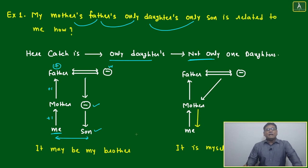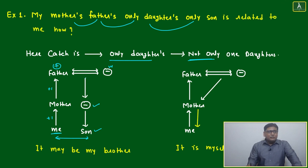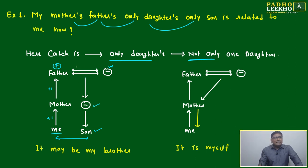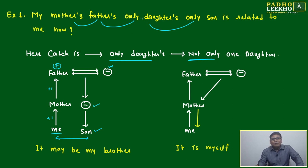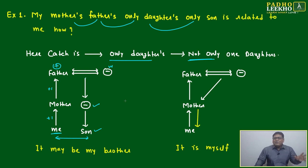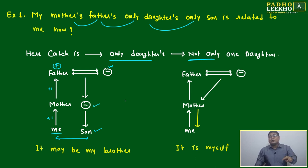At the same generation level, the possibility is: it may be my brother, or it may be myself. Just suppose this second generation has only one daughter — 'only daughter' may mean only one, but it is not certain. That is the only catch here, and based on that people make mistakes very fast.